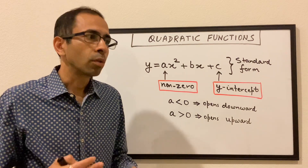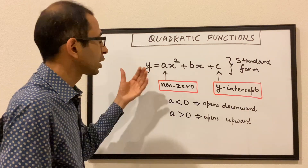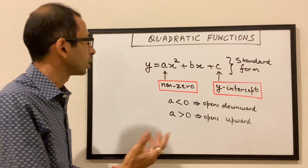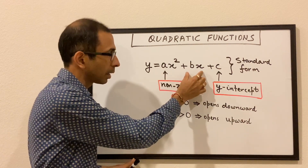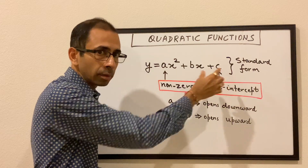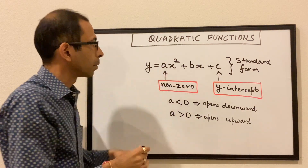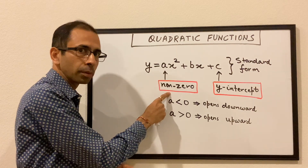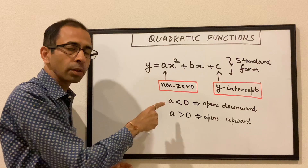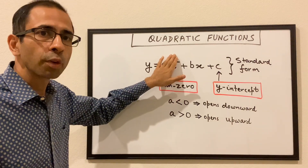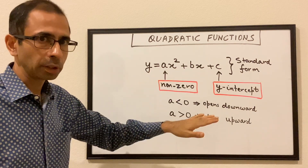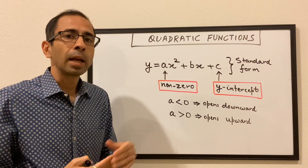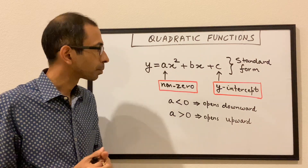The standard form of a quadratic function is y = ax² + bx + c. It has an x² term, it may have an x term, and it may have a constant c. But the x² term is mandatory — it's what makes this a degree-two function. So 'a' has to be non-zero; b and c could be zero, but if a becomes zero, the degree drops to one and it's no longer quadratic.